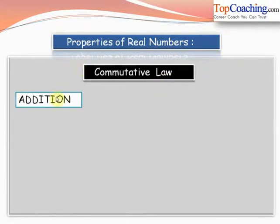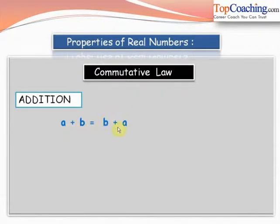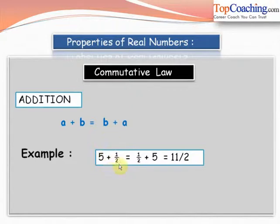Now let's see some properties of real numbers. The first is the commutative law. The commutative law of addition states that a plus b is equal to b plus a. So if we have two real numbers a and b, then a plus b equals b plus a — it doesn't matter if we change the sequence. For example, 5 plus 1/2 equals 1/2 plus 5, and both give 11/2. Therefore, the commutative law of addition holds for real numbers.